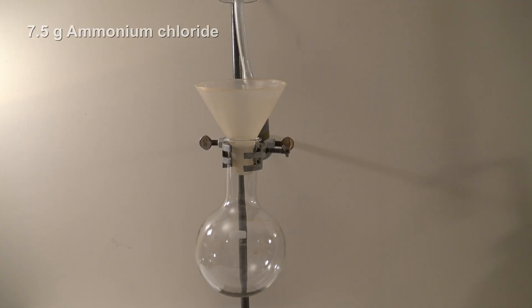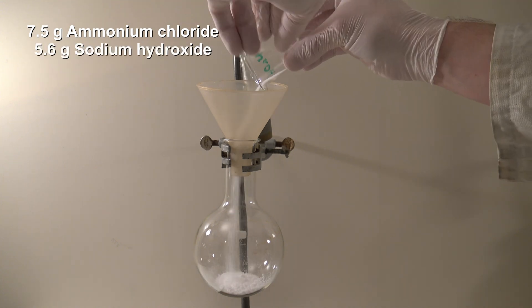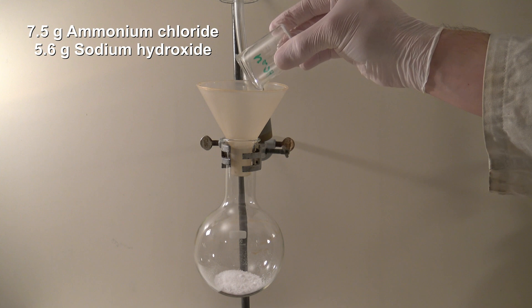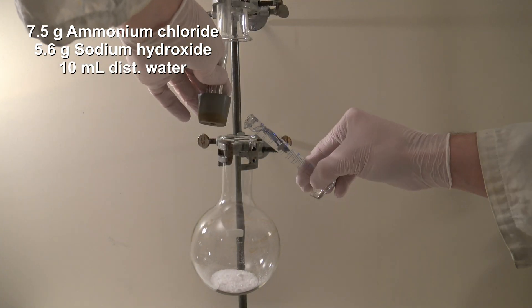Next 7.5 grams of ammonium chloride and 5.6 grams of sodium hydroxide are added to the lower flask. After adding 10ml of distilled water the flask is closed immediately.